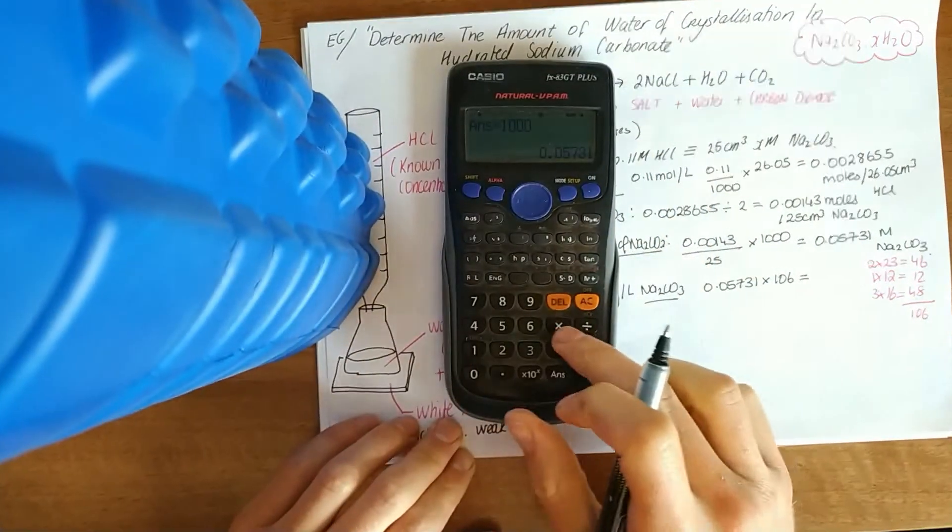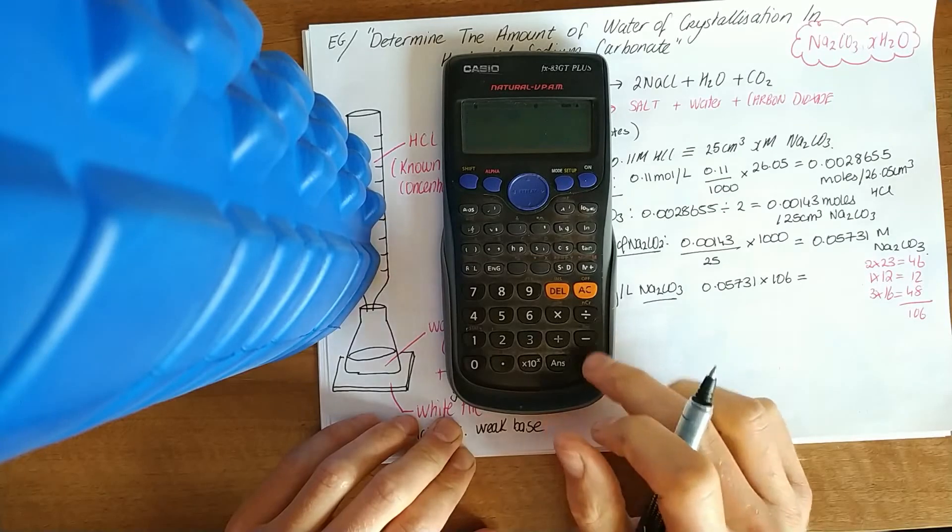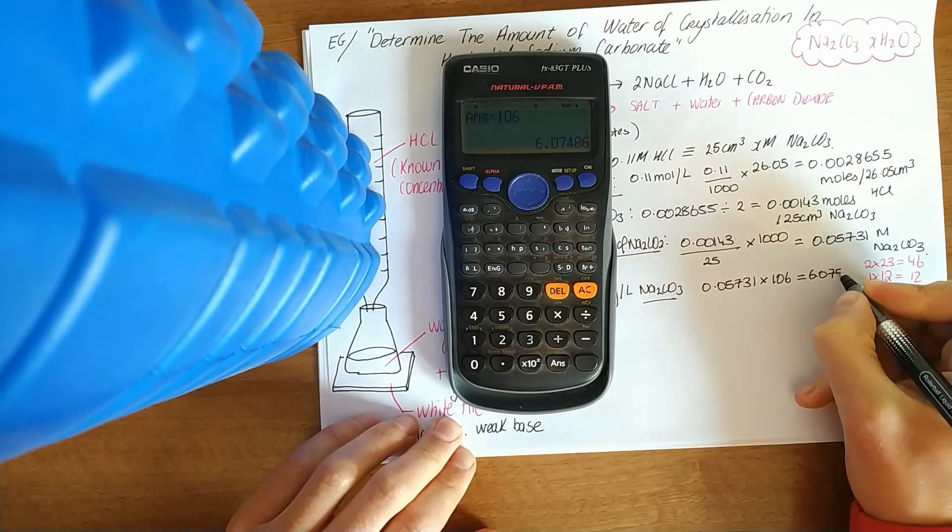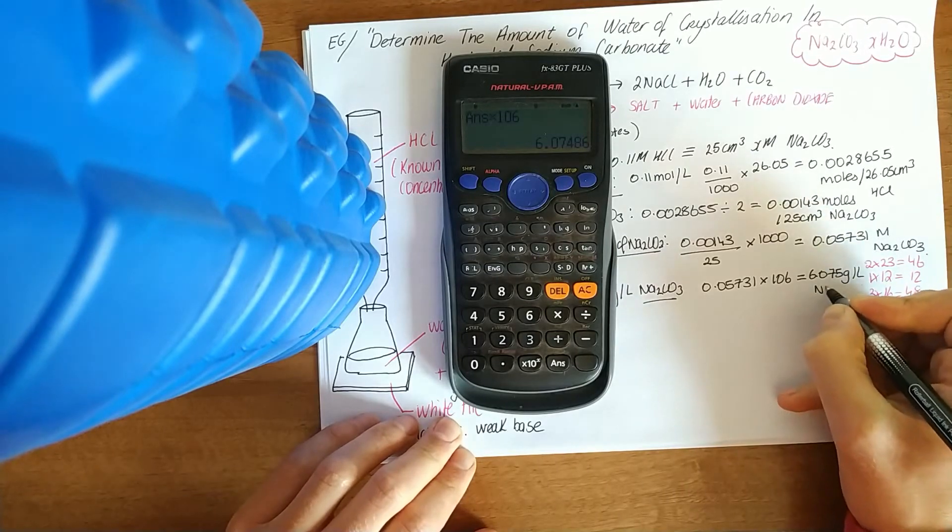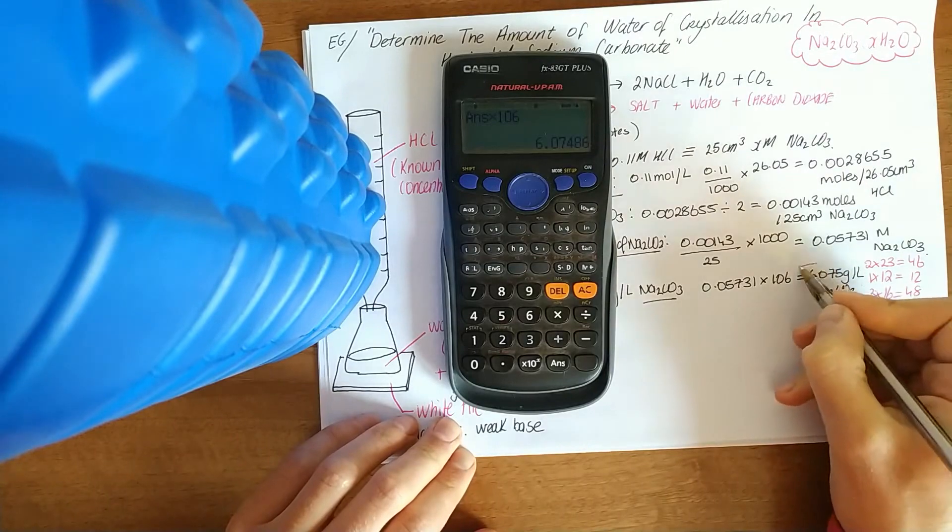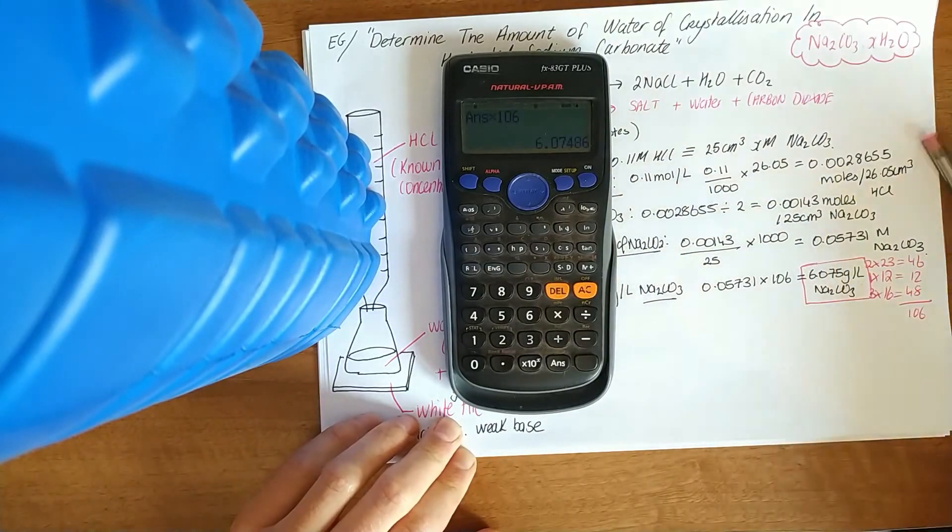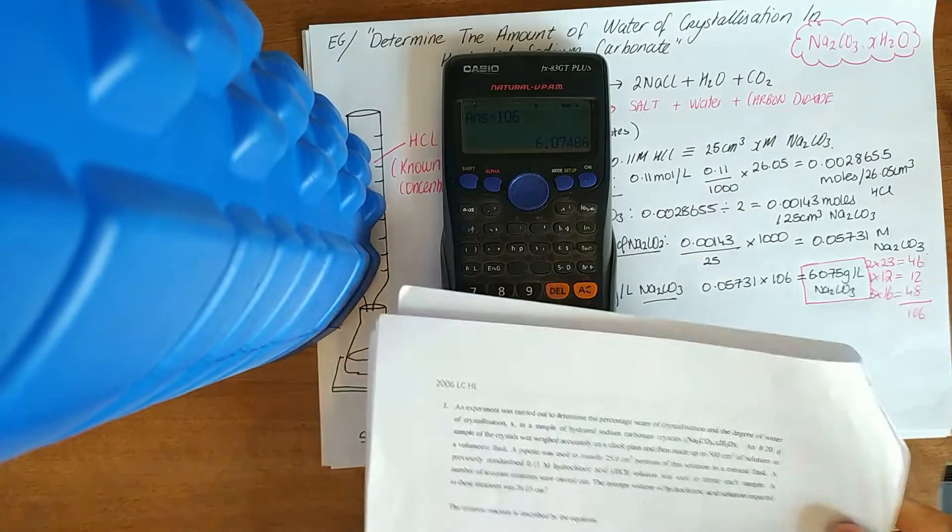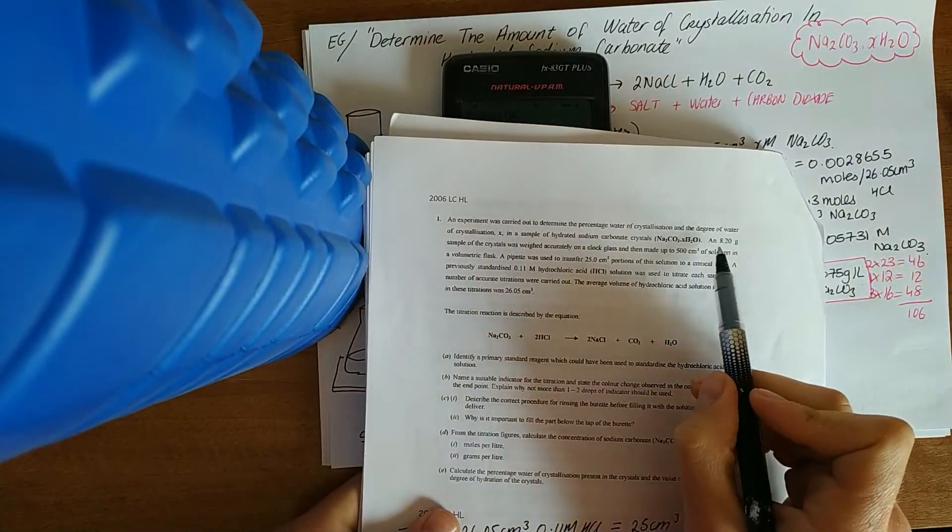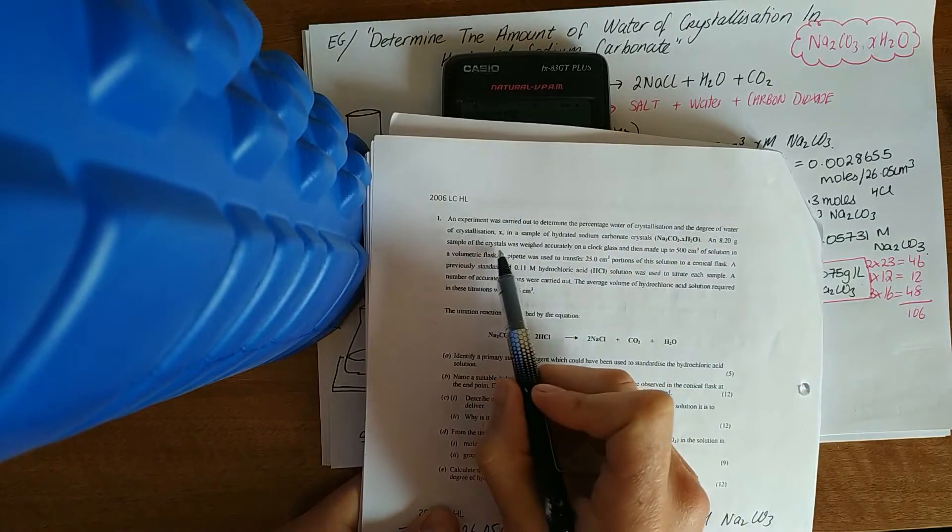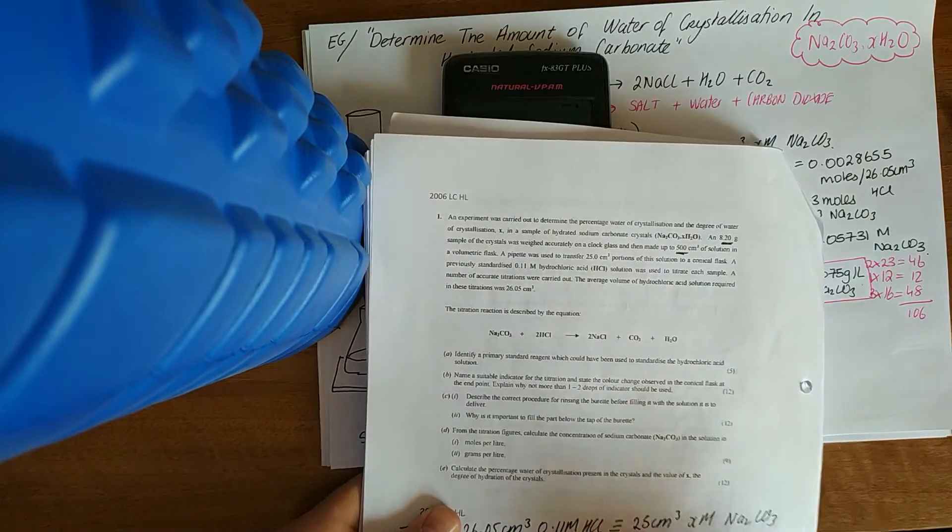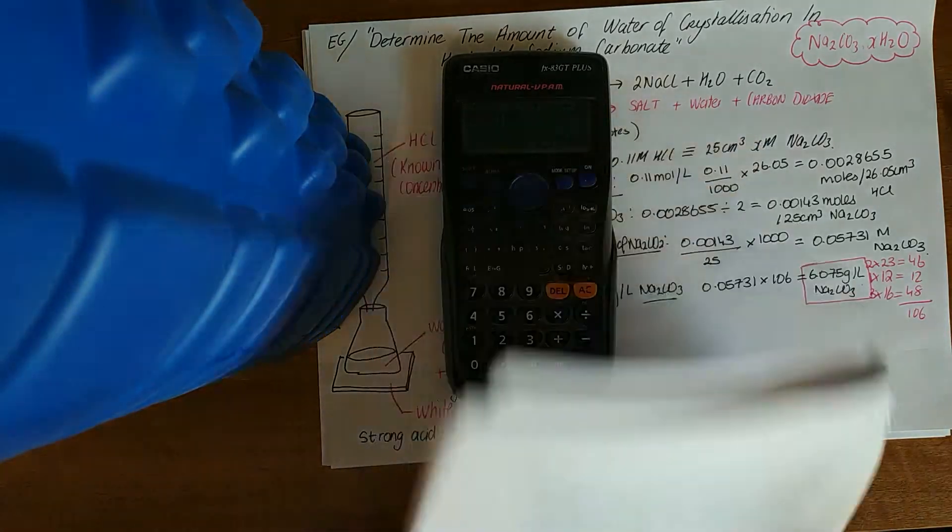I'm getting a tightening of space here, but I'll try and squeeze it all in. 6.075 grams per litre Na2CO3. Now you have to stop, you have to look back at the question. In this question here, it says 8.2 grams of the crystals was made up to 500.